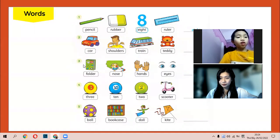Number three: folder, nose, hands, and eyes. Yes, the answer is? What's this? What's this, Ken? Folder. Okay, folder. Number four, Ken, number four. Look: three, ten, two, and scooter. The answer is? Scooter. Scooter. Number five: ball, bookcase, doll, and kite. The answer is? Correct, bookcase.